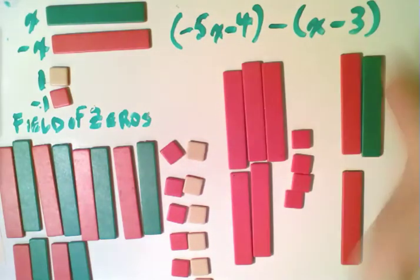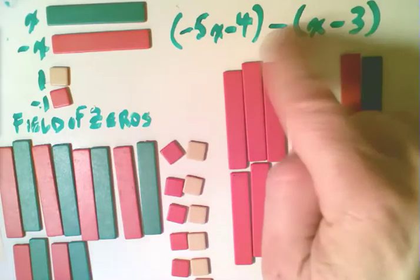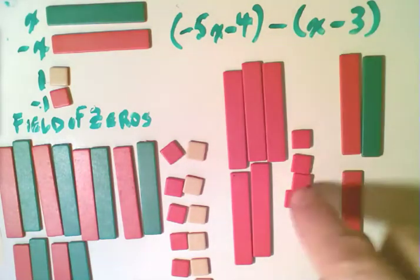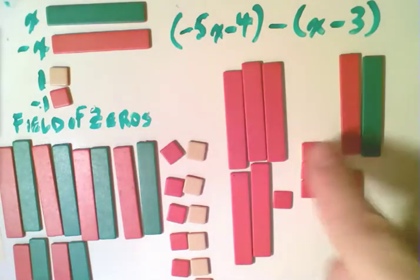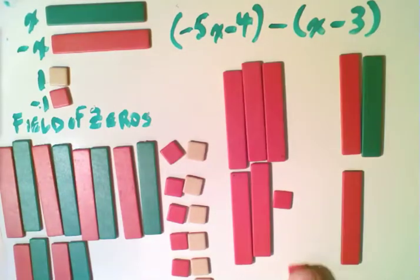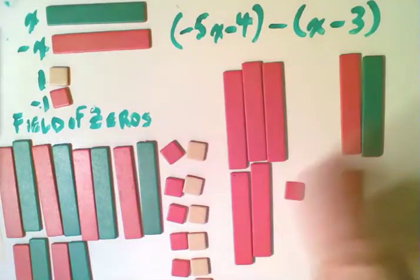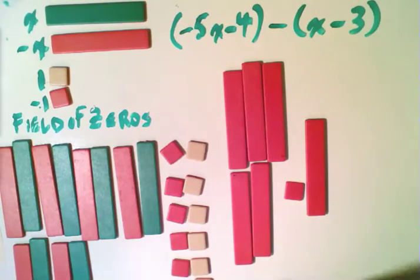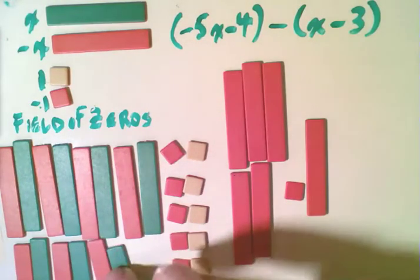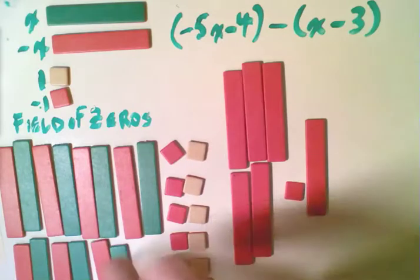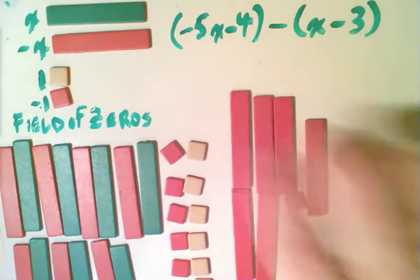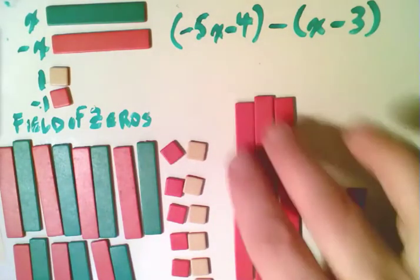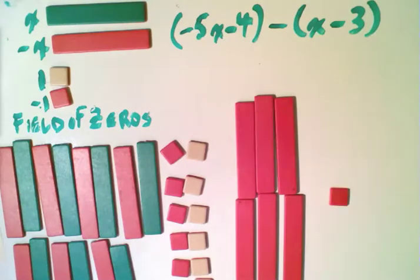And now we have to subtract negative 3. And we actually do have negative 3 here that we can remove. And so we're going to get that negative 3, and we're going to remove that from the picture. And this is what we have left. Now we have a zero pair here left. We might as well put that back in our field of zeros. Hopefully it will grow some more zeros. And then what do we have left? We have 6x and a minus 1.